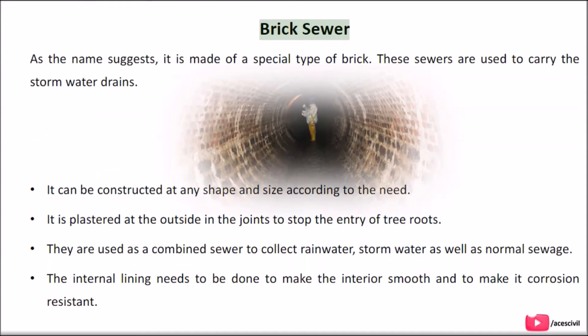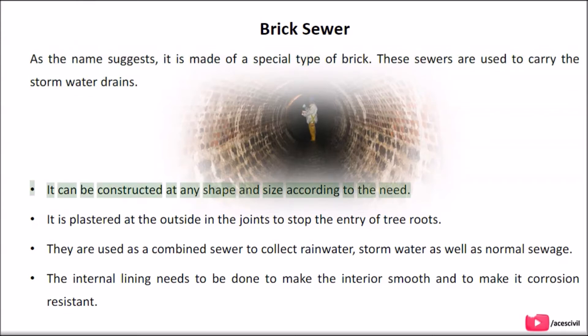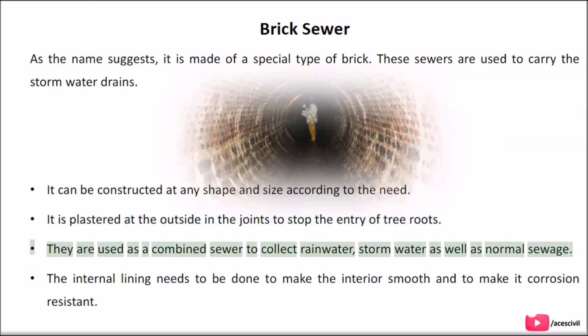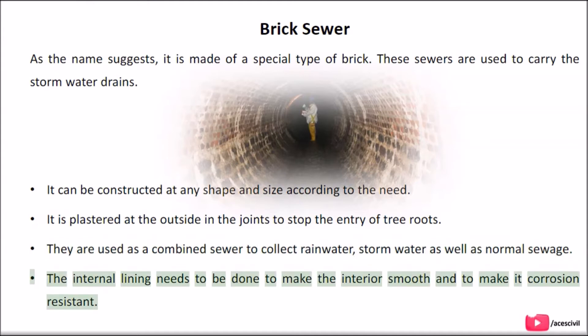Brick Sewer: As the name suggests, it is made of a special type of brick. These sewers are used to carry storm water drains. It can be constructed in any shape and size according to need. It is plastered on the outside at the joints to stop the entry of tree roots. They are used as a combined sewer to collect rainwater, storm water, as well as normal sewage.